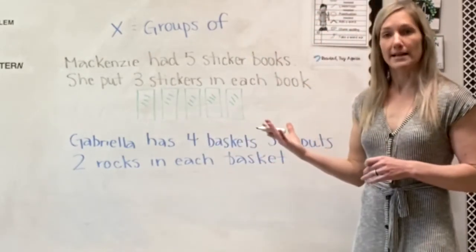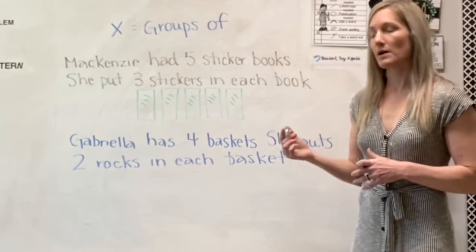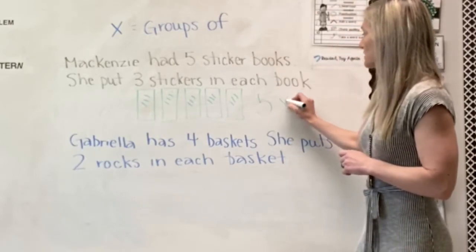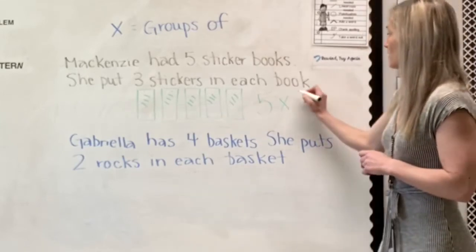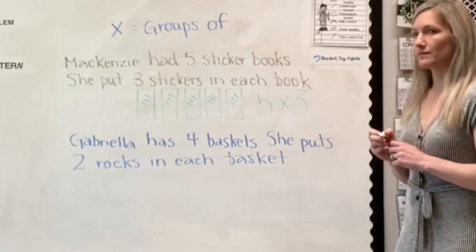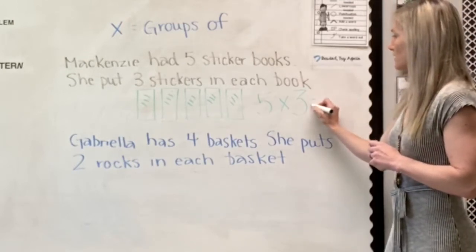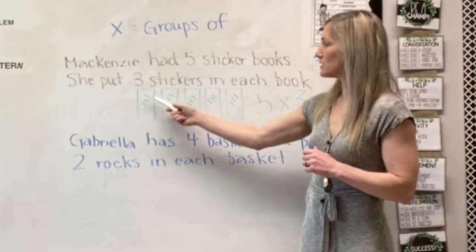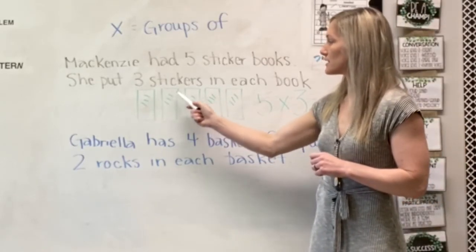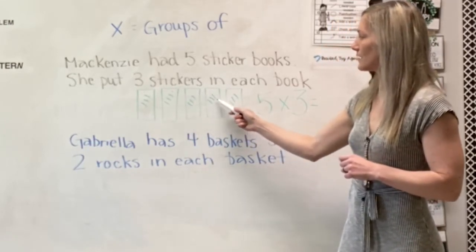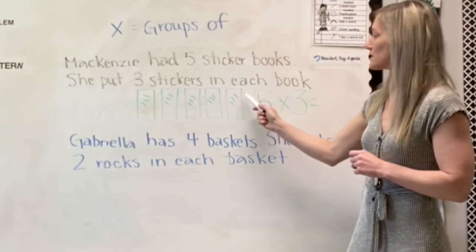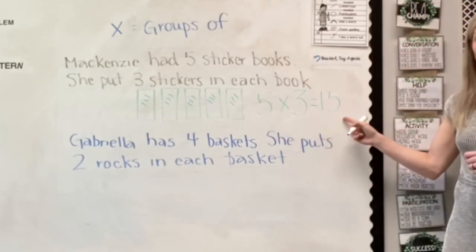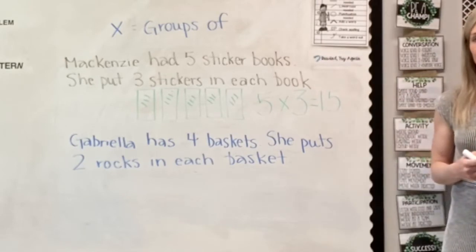So if I want to write this out using an equation, I would write it like this: I have five groups of three stickers. How many stickers do I have all together? If I count them: one, two, three, four, five, six, seven, eight, nine, ten, eleven, twelve, thirteen, fourteen, fifteen. I have fifteen stickers. This is the equation for my number story.